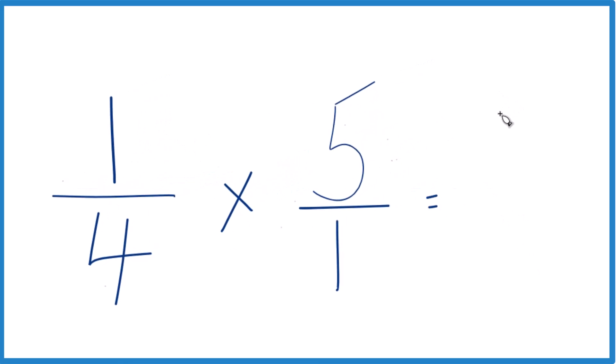1 times 5, that gives you 5. 4 times 1, that gives you 4. And one-fourth of 5, or one-fourth times 5, that's 5 fourths.